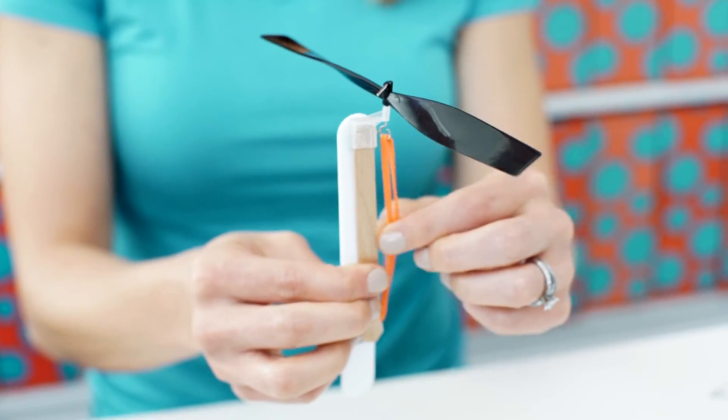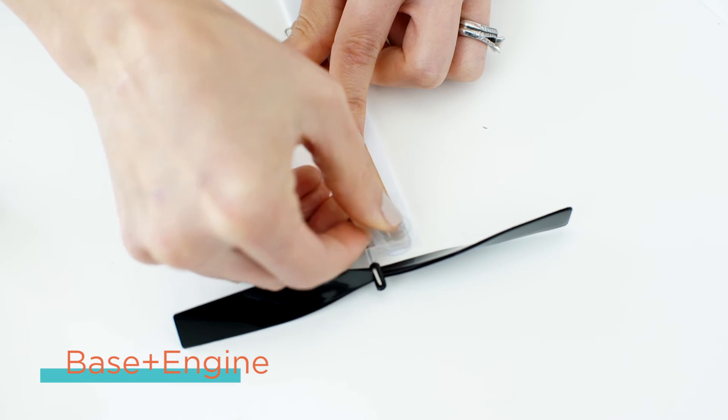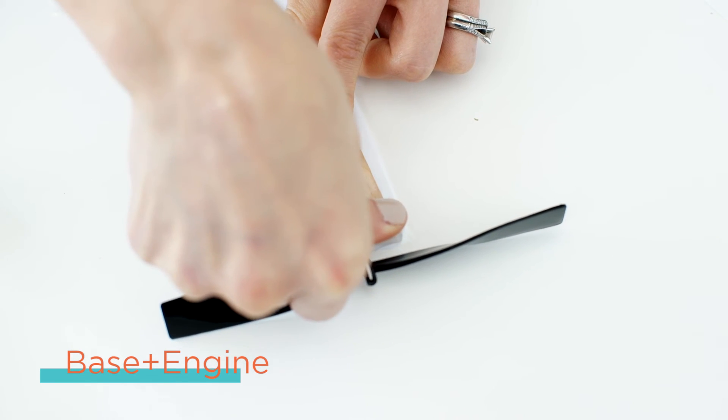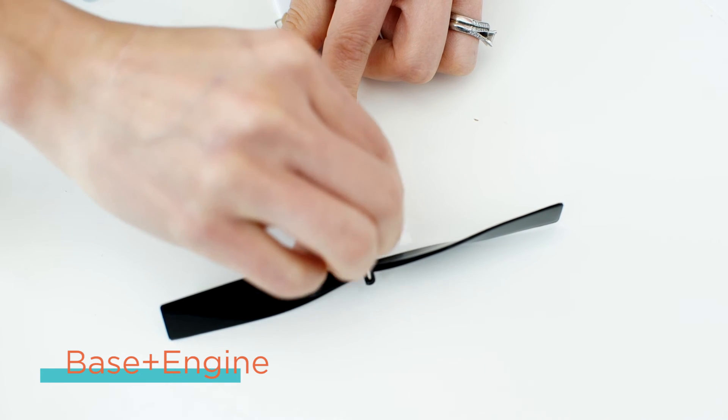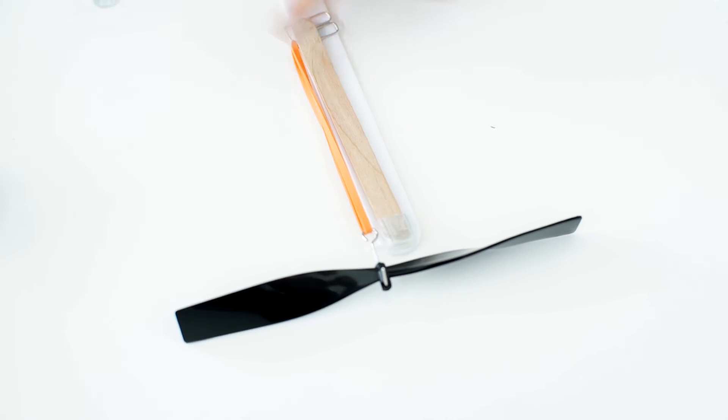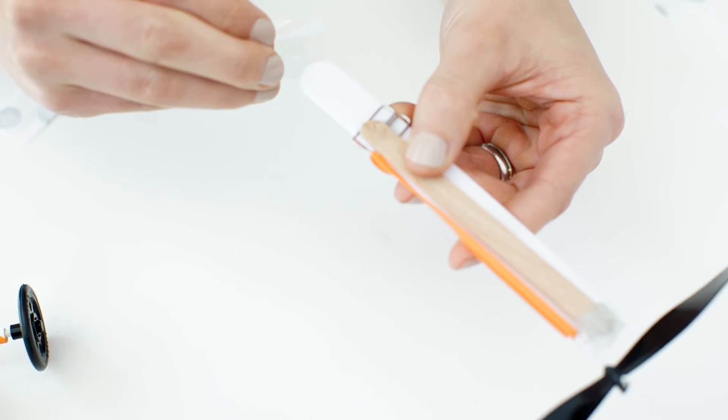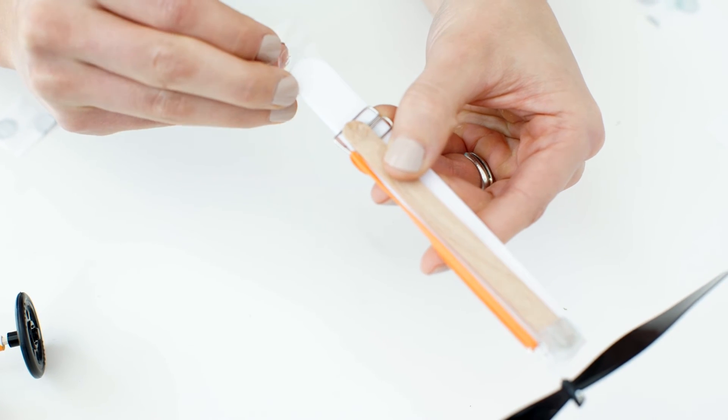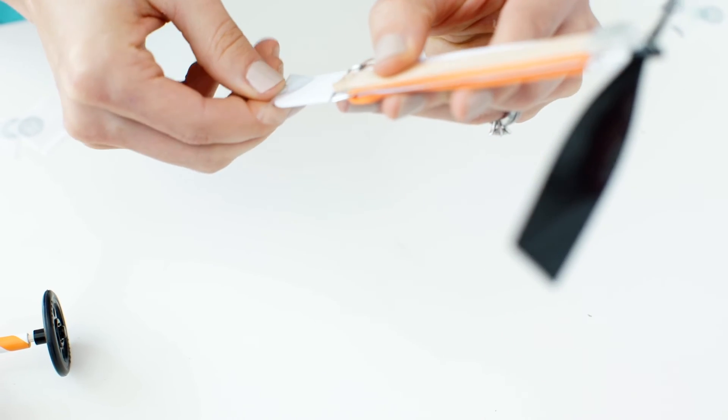Awesome work! You've built your propeller. Place one glue dot on the clear plastic of the propeller like this. Then place your second glue dot around the tip like this. Give it a good hug.